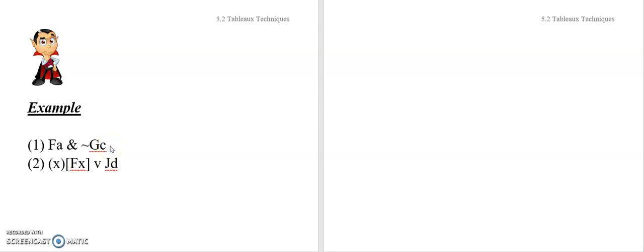I'm going to ask you to go ahead and give it a try. If you don't get it, no big deal — this is where you're going to learn how to do it. So let's focus on the first sentence: FA and not GC. Notice we've got individual constants involved now. Can you provide a tableau interpretation that makes the sentence true? Can you also provide one that makes it false? Can you do that using three objects for both interpretations? Pause now, give it a shot, and we'll come back and do it together.